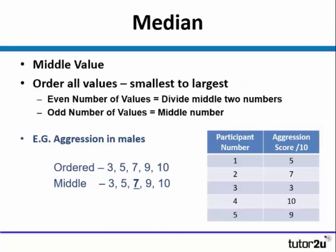The median is the middle value, and the way in which we calculate this is to order all the values from smallest to largest. We're not ordering participant numbers — we're ordering the aggression scores out of 10. If we have an even number of values, we would have to divide the two middle numbers. In the example below, we have an odd number of values because we have five participants, so we simply find the middle number, which would be seven.